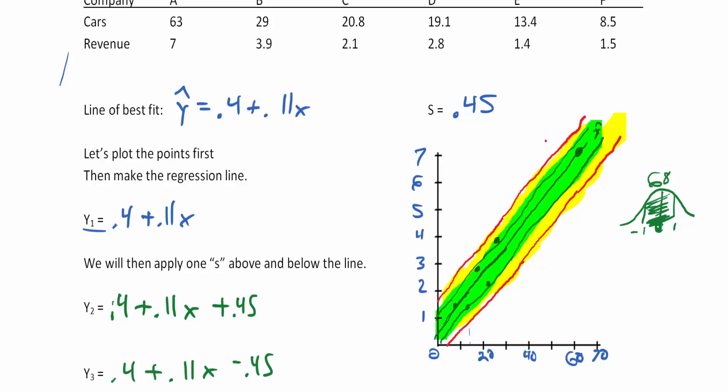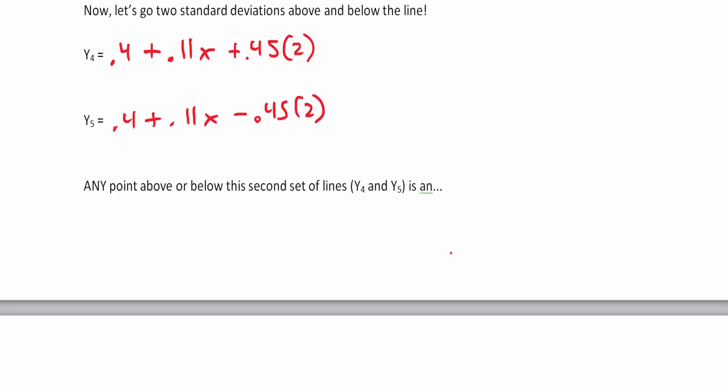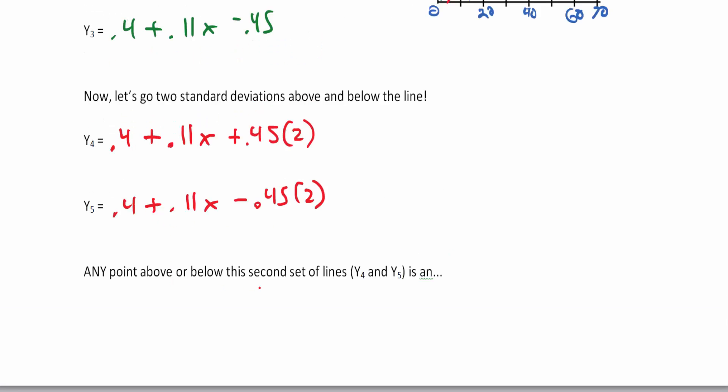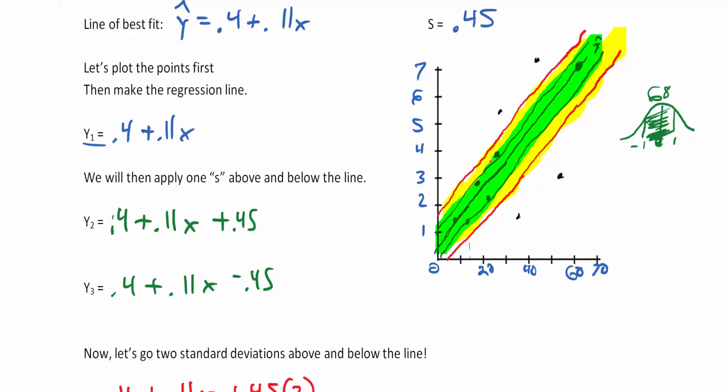What we have now is this 95% zone. 95% of the data is going to be in this green and yellow section, which means that any data point that occurs outside of this zone—anything outside had less than a 5% chance of happening. Any point value above or below the second set of lines, y4 and y5, is an outlier.